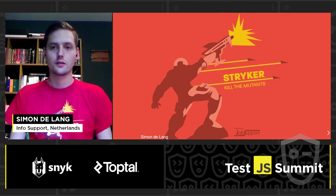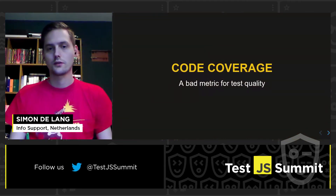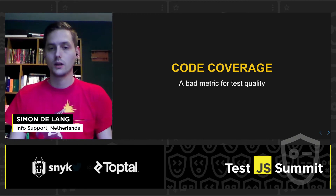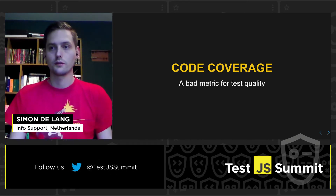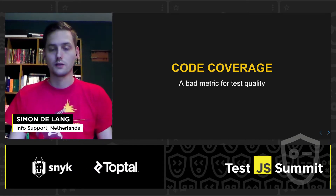But before we dive into mutation testing, I first want to talk a bit about code coverage. Code coverage is often used by developers as a means to measure the quality of their tests. In my eyes, it's a bad metric to measure this. The only thing code coverage actually tests is whether or not code gets executed. The reason I write unit tests is to verify that my code works right now and to make sure it will keep working in the future. And if something happens and my code behaves differently, I will get a failing test. Code coverage does not measure this — it only measures if your code gets executed.